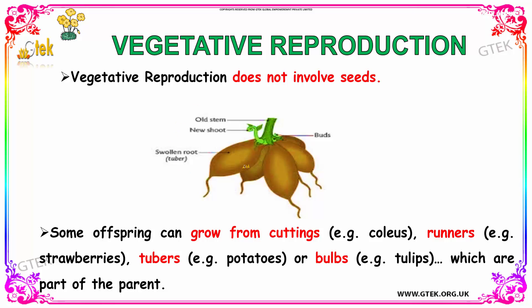You can see the tubers in potatoes over here. Or bulbs for tulips, which are part of the parent. You can see it over here. The parent is the potato, and the part of the parent is called a tuber.